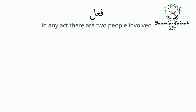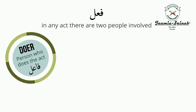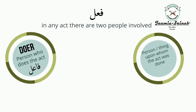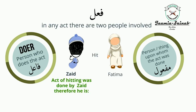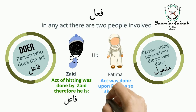In any action or verb, you have two people: you have the doer, and then you have the person or the thing upon whom the act was done. For example, if Zayd hits Amr, then Zayd is the doer and Amr is the person upon whom the act of hitting was done.